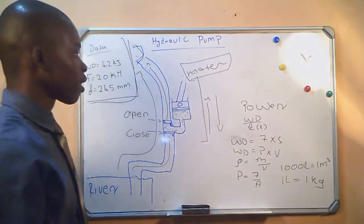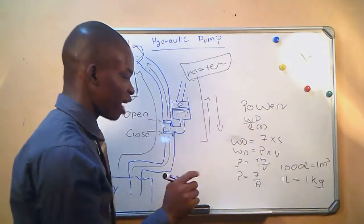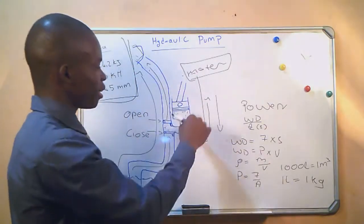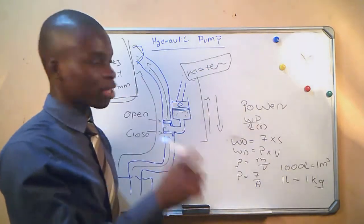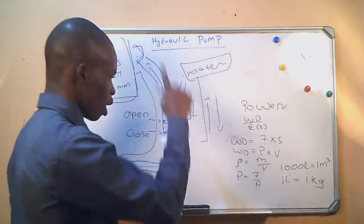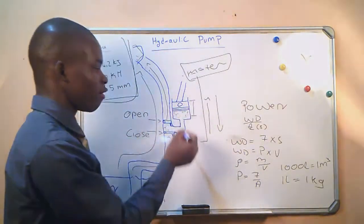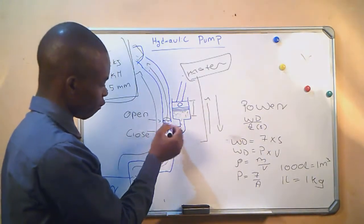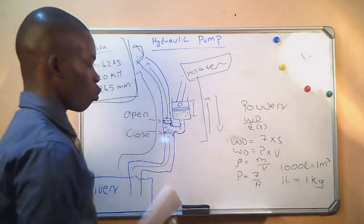We must calculate the pressure of the water as the piston is moving down. The stroke length is the length moved by the piston as it goes up and down. The volume is the water delivered by this pump when the valve opens, and the mass is the mass of that water. So we will start.